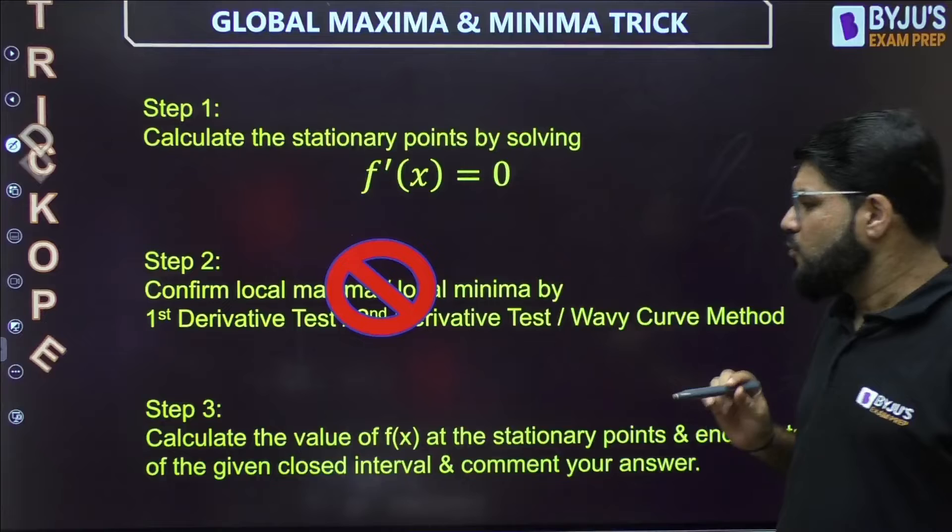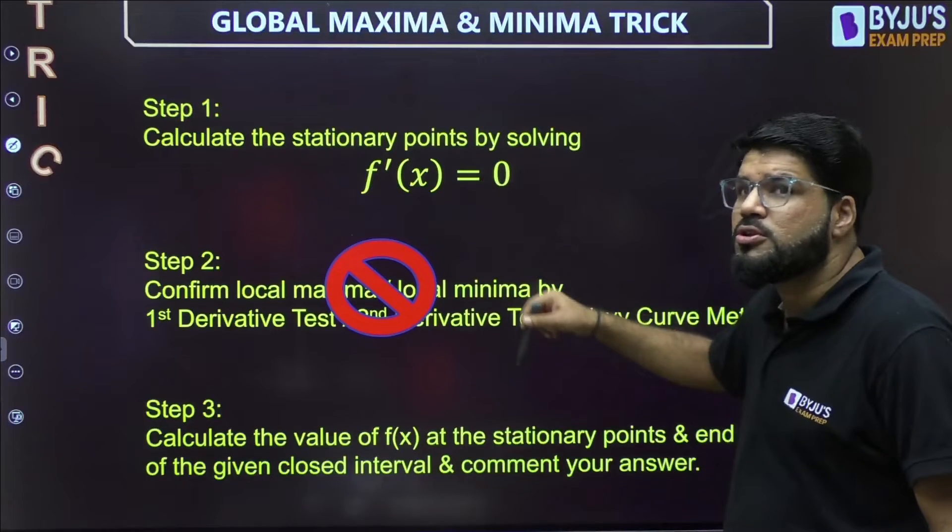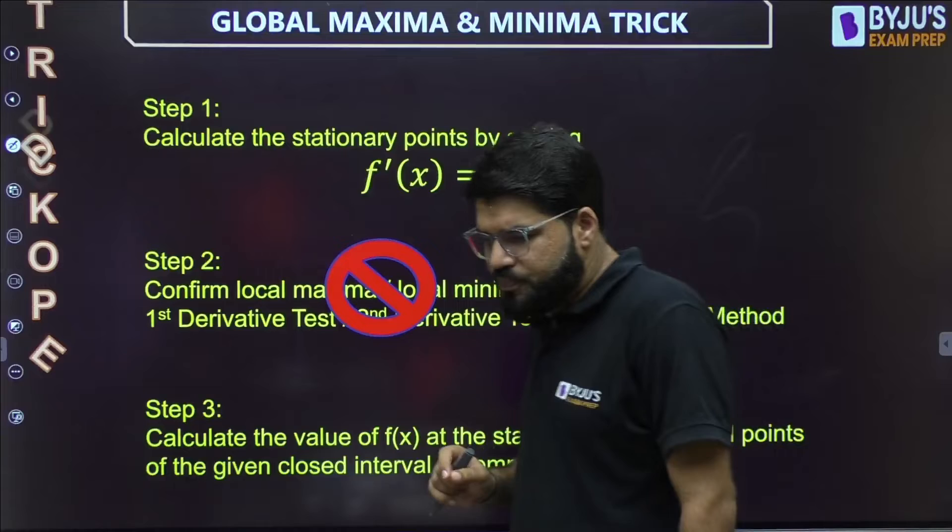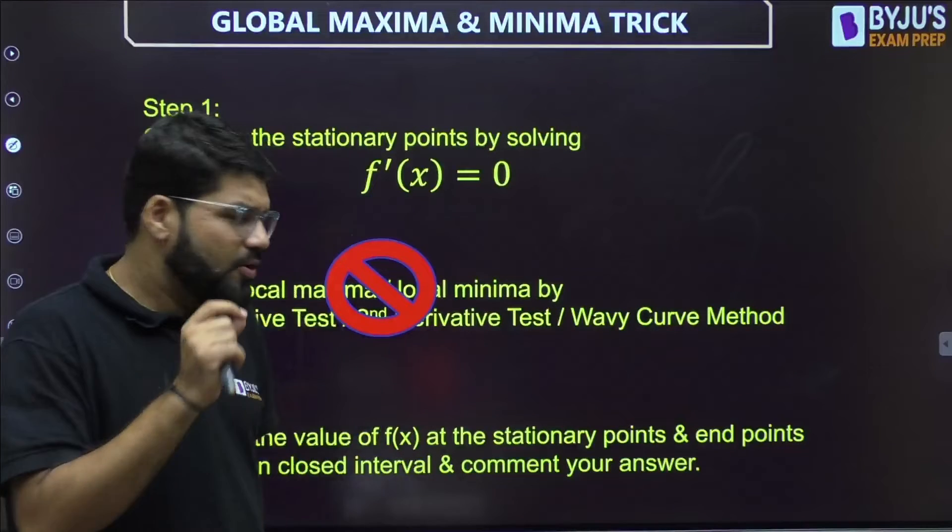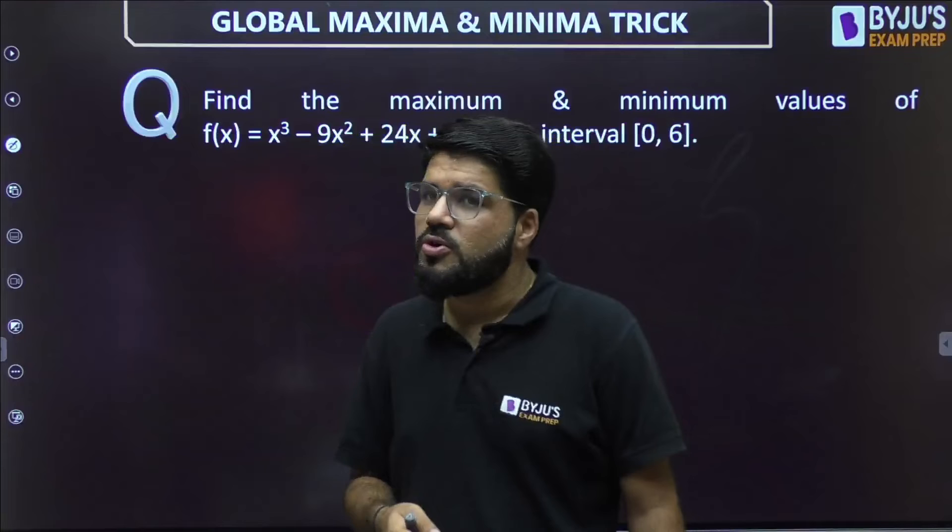We will directly go to another step. What I am going to do: calculate the value of f(x) at the stationary points obtained and also at the end points of the boundary, and then comment on your answer. How to comment? I think the tricks can only be more understood by question.